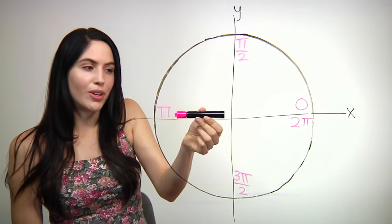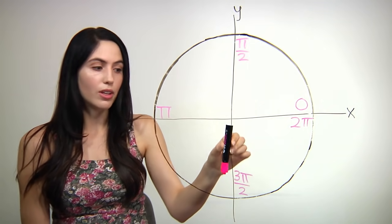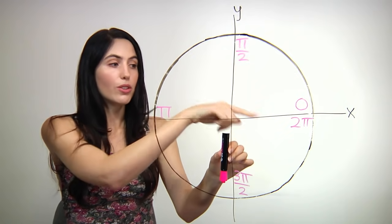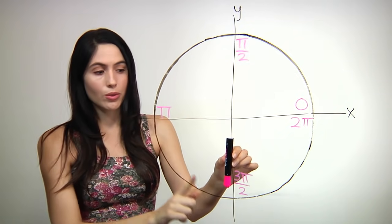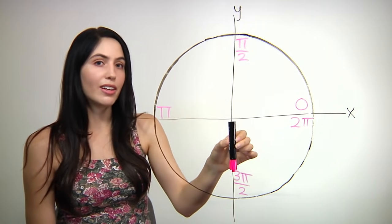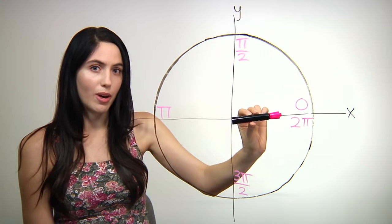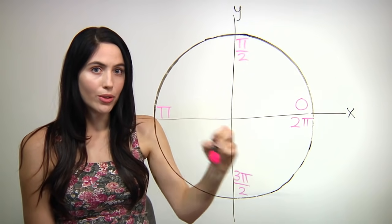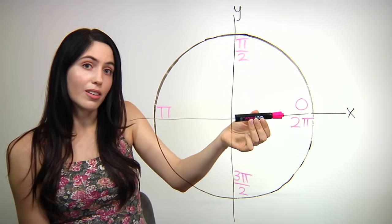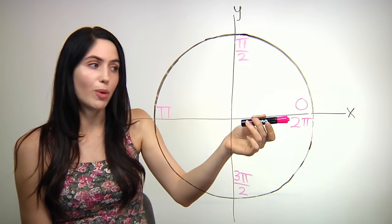Then if we move another quarter of the way through the circle, we have the angle three pi over two. One quarter through the circle was pi over two, so three quarters of the way around the circle is three pi over two. Finally, if we move another quarter circle, we get two pi — now we've come full circle. Notice this angle here, this position, is zero but also two pi.